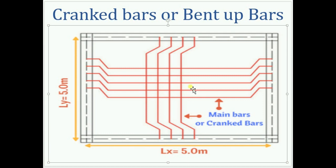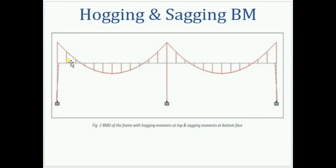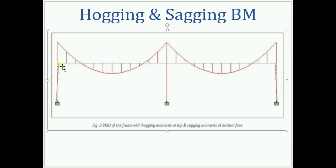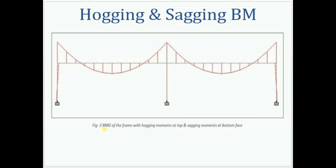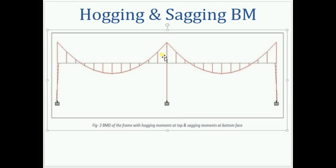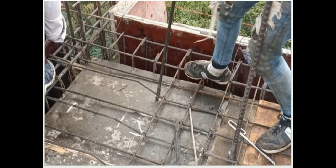These alternate bent up bars are provided to counteract the hogging moments, i.e. negative moments in the slab. As we know, hogging bending moments are developed at the supports of the slab, so to resist these moments they are bent up alternately like this on site.